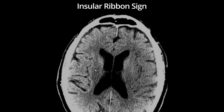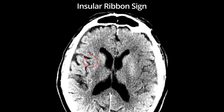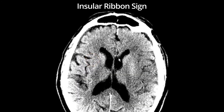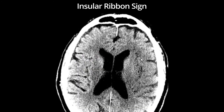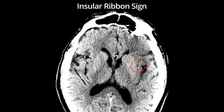Here is an example of the insular ribbon sign. Notice on the right that the gray matter of the insula is maintained. However, on the left, the insula is not well-seen and is hypoattenuating. This case is shown on stroke windows, which makes the finding more obvious.